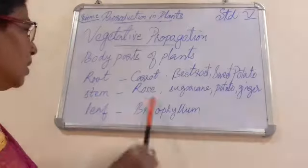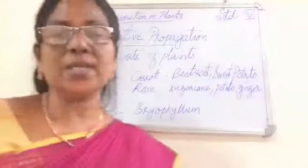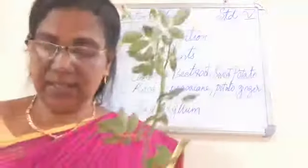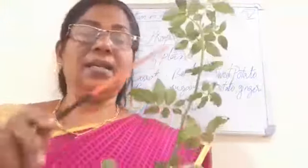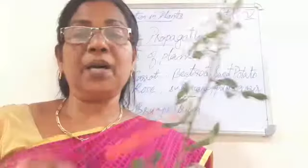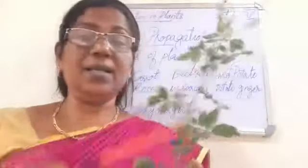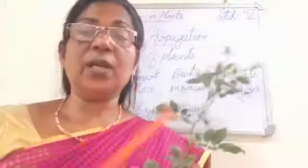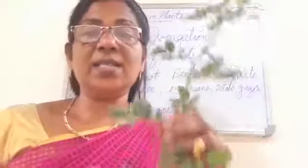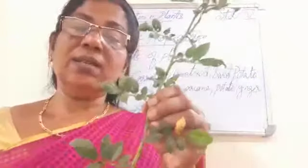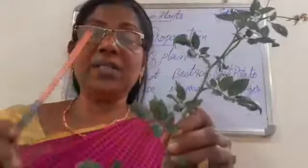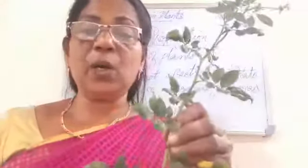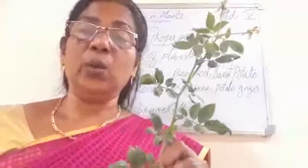Now let's know how a plant reproduces through its stem. This is a plant part of a rose. The plant part used for producing a new plant is called a stem cutting. When we plant this stem cutting in the soil, it will develop roots and grow into a new plant.